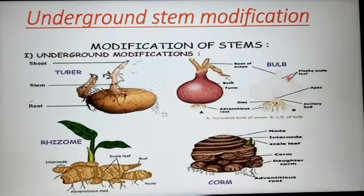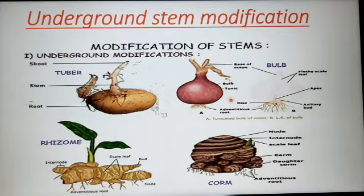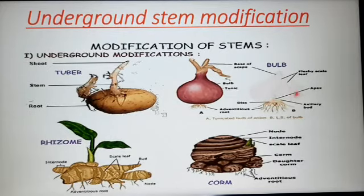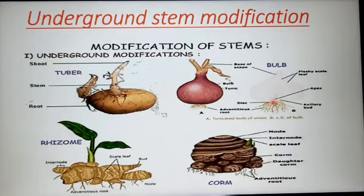The next one is a bulb. Onion and garlic are both examples of a bulb. It has a short, flattened, disc-like stem. You can see that only this small part is the stem — these are the fleshy scaly leaves. The edible part is the scaly leaves; the stem is reduced. Here you can see the disc-like stem, and below the stem you can see the adventitious roots. This is the reduced stem.